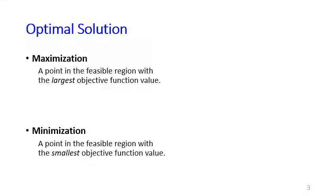So what is an optimal solution? In the maximization case, an optimal solution is a point in the feasible region with the largest objective function value. In other words, you compare all the points in the feasible region and the one that has the largest objective function value is called the optimal solution. Accordingly, in the minimization problem, you also compare all points in the feasible region, and the one with the smallest objective function value is called the optimal solution.